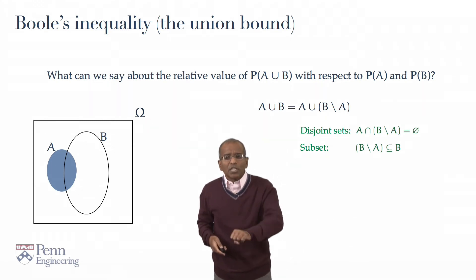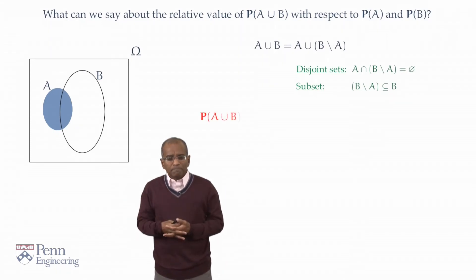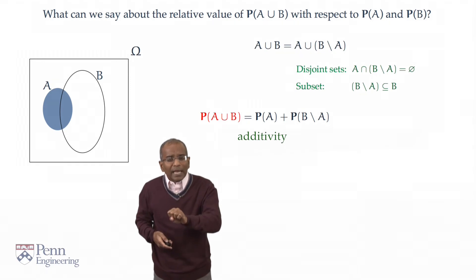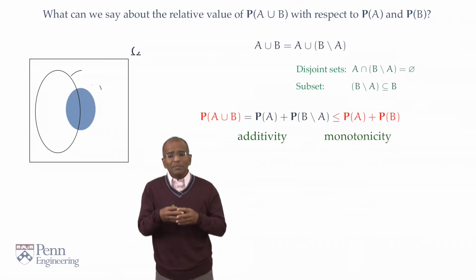Now, with these observations under our belt, we can immediately write the probability of A union B as the probability of A plus the probability of B minus A. This is additivity. But the probability of B minus A is no larger than the probability of B by monotonicity. And we immediately get a beautiful and elegant inequality.